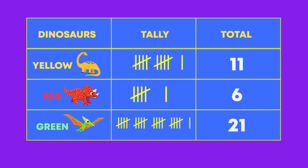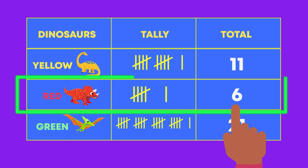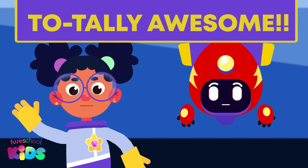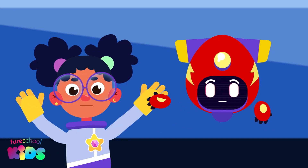Our telechart is complete. Friends, can you tell us which kind of dinosaur did the space rangers see the least? The red dinosaur is right. You are totally awesome.